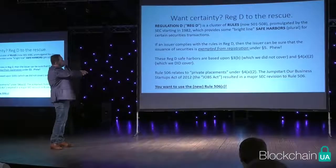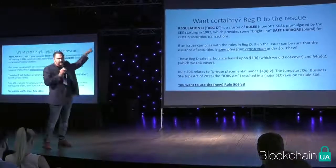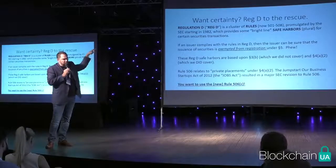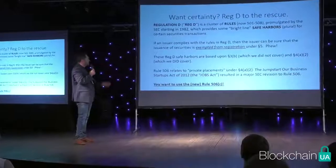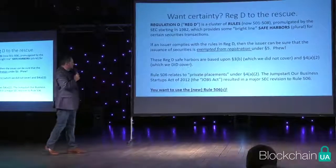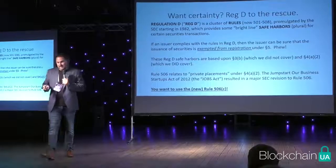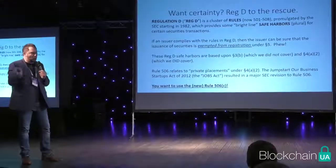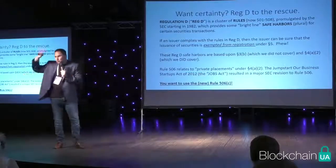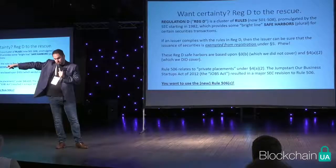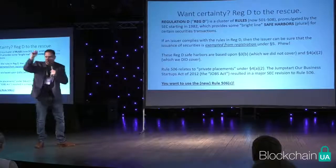If you're raising money from US investors, you want to use Regulation D — Reg D. Reg D is a cluster of rules numbered 501 through 508. The first rules came out in 1982. What Reg D does is say: if you follow these rules, no matter what, we'll treat it as a private placement and you're safe. Section 4A2 is a little vague, but Reg D is not vague. You follow these rules, you're safe, and you're exempted from registration under Section 5.